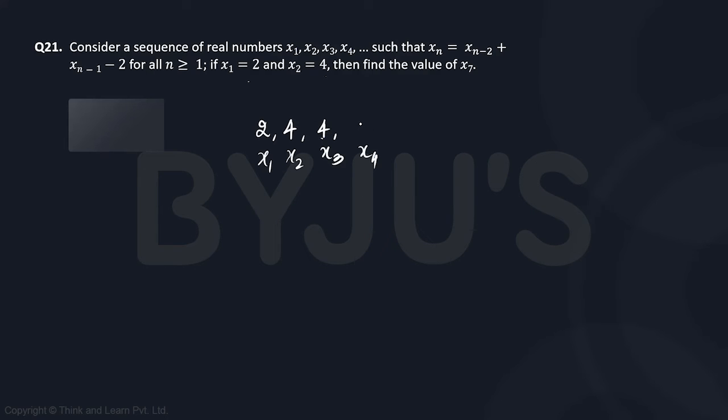x5 is the sum of the last two, which is 4 plus 6 equals 10, minus 2 gives us 8. x6 is the sum of the last two, which is 8 plus 6 equals 14, minus 2 gives us 12.